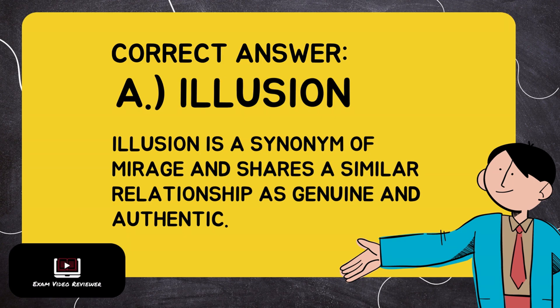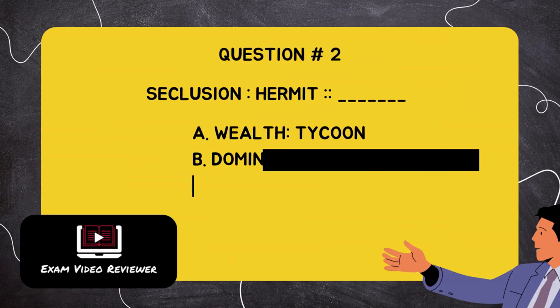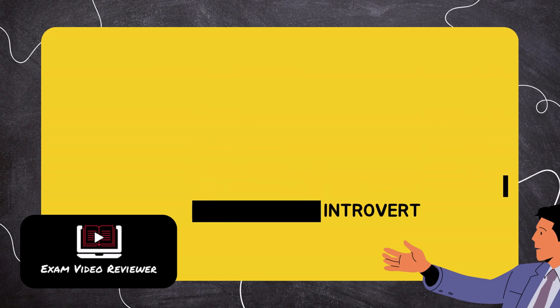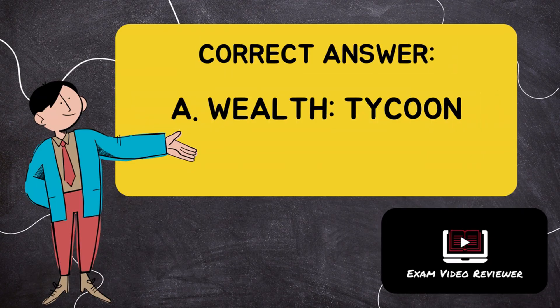Question number two: solitude is to hermit as blank. Letter A: wealth is to tycoon, Letter B: domination is to athlete, Letter C: ambition is to philanthropist, Letter D: torpor is to introvert. The correct answer is Letter A, wealth is to tycoon.